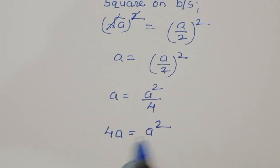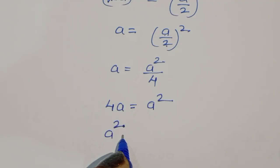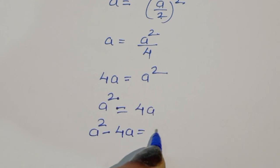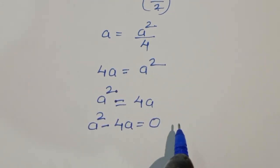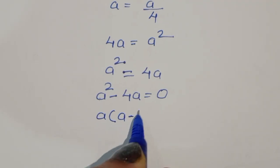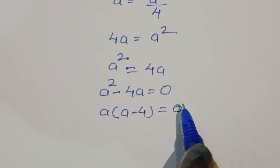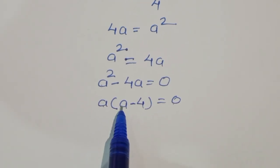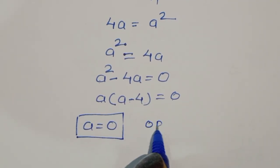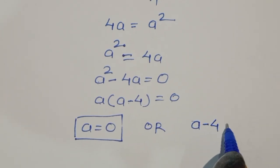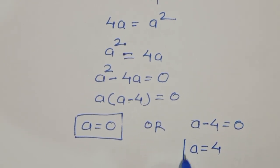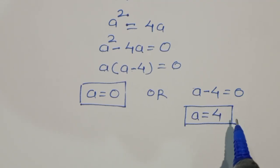We can write this as a squared is equal to 4a, then a squared minus 4a equals zero. This is the equation form. We take a as common factor: a times (a minus 4) equals zero. This gives us two equations: the first is a equals 0, and the next is a minus 4 equals 0.